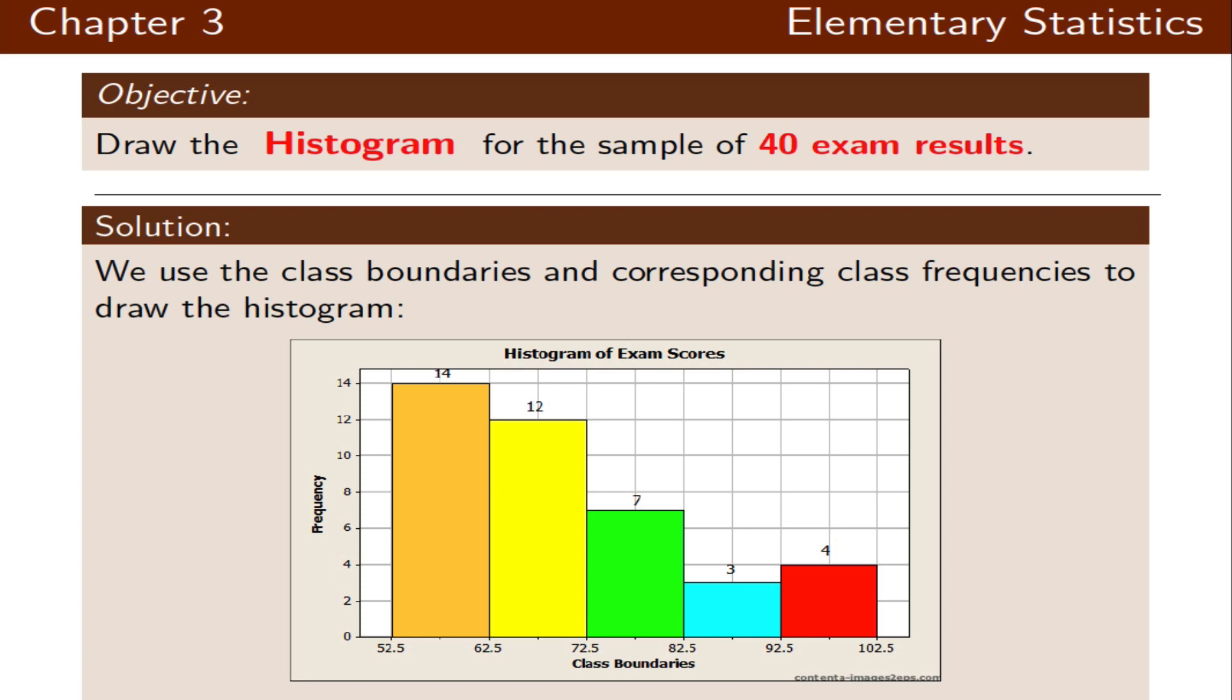Unlike the bar chart, the histogram bars are attached to each other since they share common boundaries, unless there is a class that has zero frequency, in which case there would be a gap.